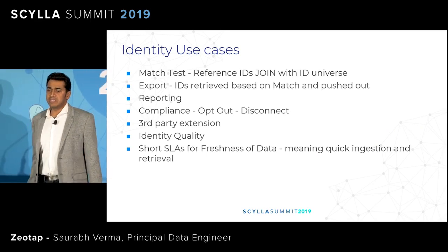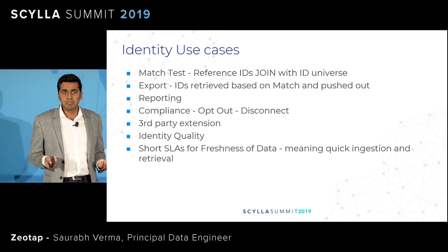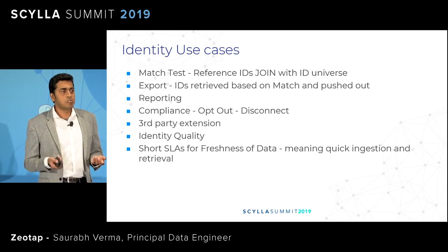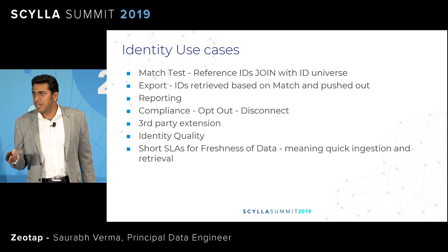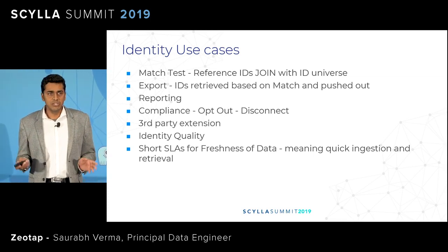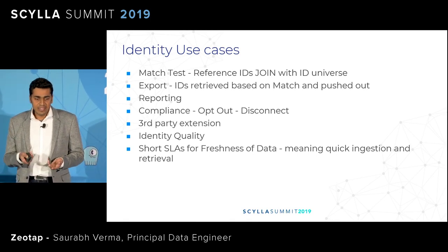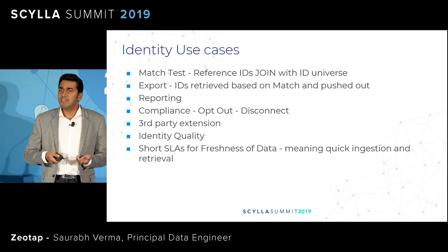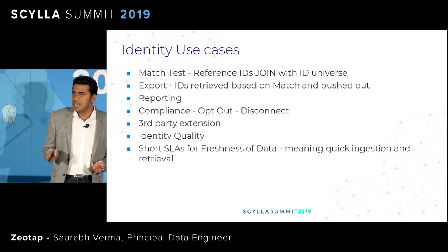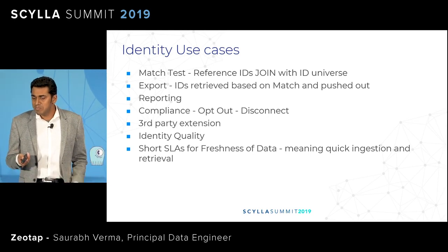What is the business case with identity resolution? The first two are the match test and export, or the monetization, which actually drive the money generation. For match test, suppose one of Zeotap's customers comes and says, I have one million email IDs — can you tell me the match percentage? We do an inner join of our data set. Say we have 500K IDs, which is 50%. From the 500K identifiers, we have a transitive link to other identifiers, since a person has multiple identifiers. So this transitive link together forms two million IDs, meaning you have a 200% match rate. This is the match test use case.